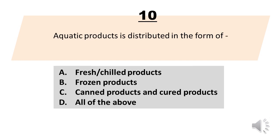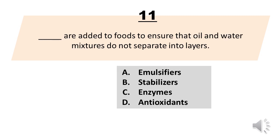Aquatic products are distributed in the form of: A. Fresh or chilled products. B. Frozen products. C. Canned products and cured products. D. All of the above. The correct answer is Letter D, All of the above.